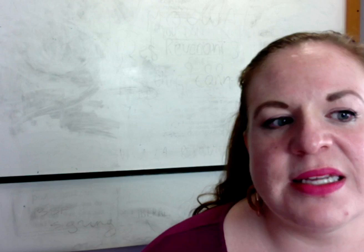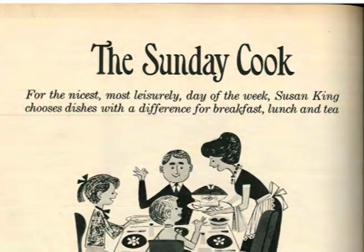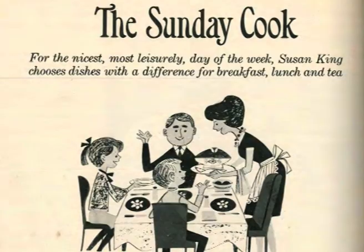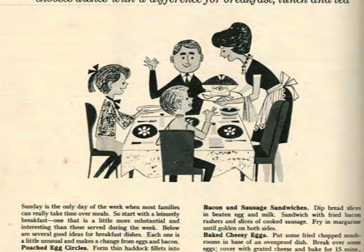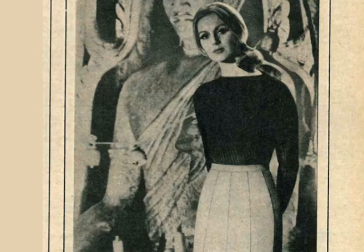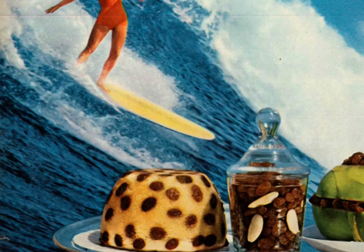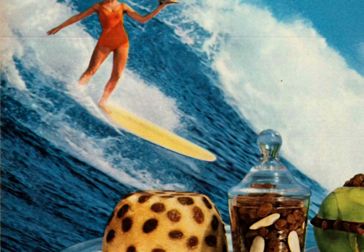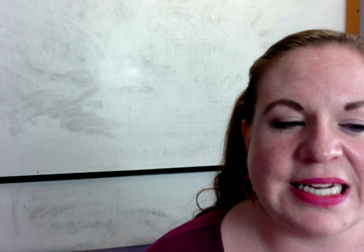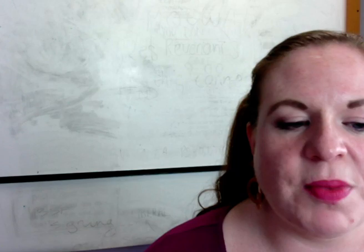Likewise, in the Sunday Cook article about the recipe pages, we see the woman setting the table, cooking and serving for her family, including her husband and children — again, not sexualised in the slightest. Even on the fashion pages, we see an advert for skirts with no sexualisation. There is a woman in a swimsuit in the Sultana's advert, which perhaps might have been a bit more reflective of the sexualisation of women going on in the 1960s, but that really is one of the only examples of the sexual revolution from that era.